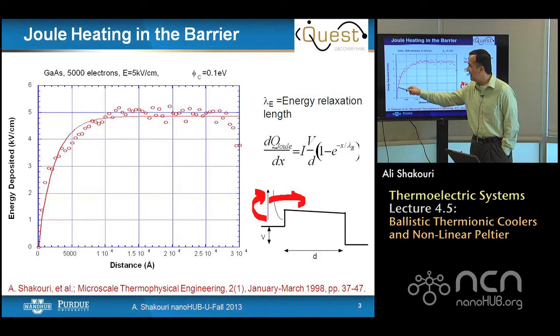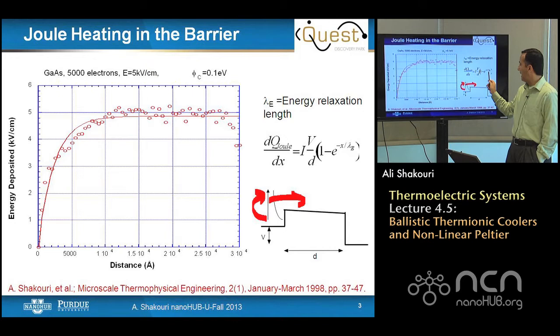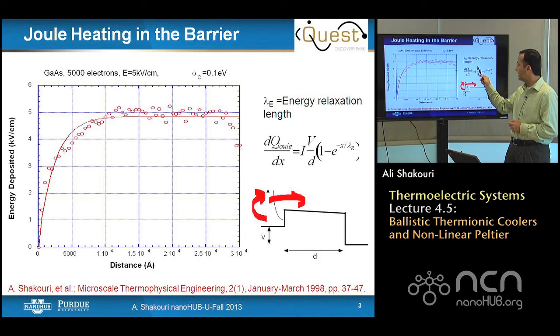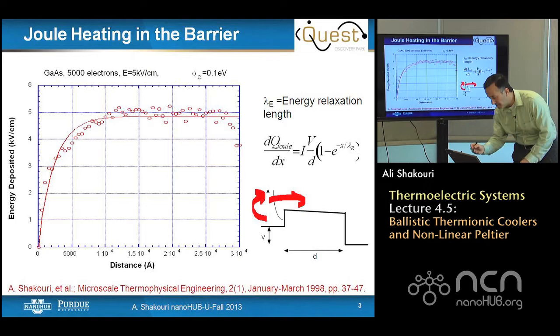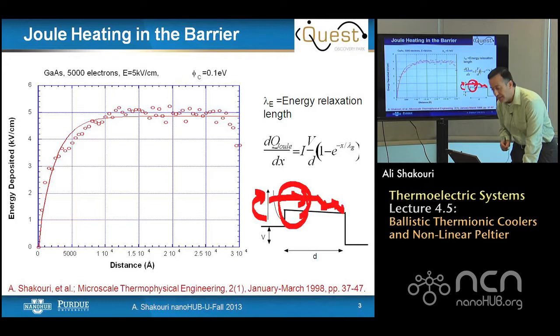This can be fitted with an exponential curve. The energy and the distance over which this transition happens is called the energy relaxation length. So the joule heating locally can be approximated by I times V divided by d. But a 1-minus-exponential term gives us this solid curve. Basically, not much joule heating happens near the emission because electrons don't have time to relax — they are first emitted and go straight before they can scatter. So at the beginning you don't have as much joule heating, and this is included here.